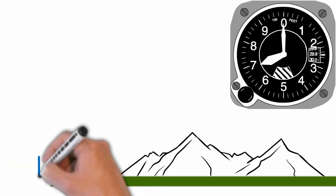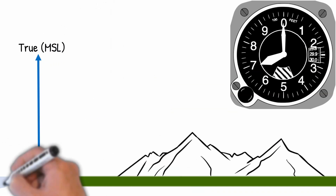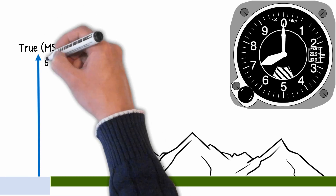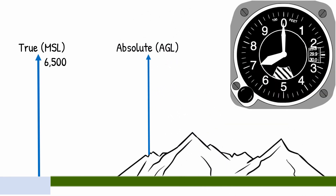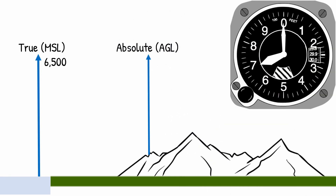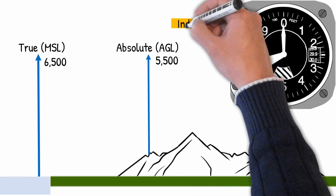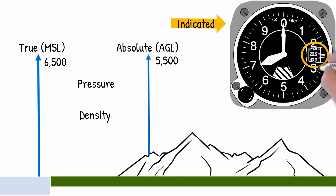Well, in the next five minutes, I'm going to help you understand what causes altimeter errors and how to correct for these errors. But first, let's start with some terms. True altitude is your altitude above mean sea level. Absolute altitude is your altitude above ground level, or AGL. Indicated altitude is basically what you see on your altimeter and what the altimeter reads. And then we have pressure and density altitude, and then you have the Kollsman window.